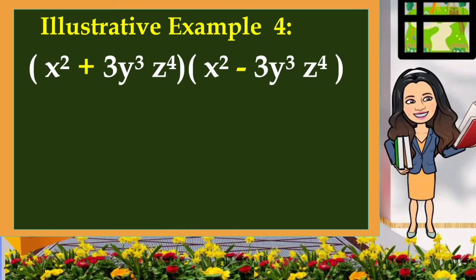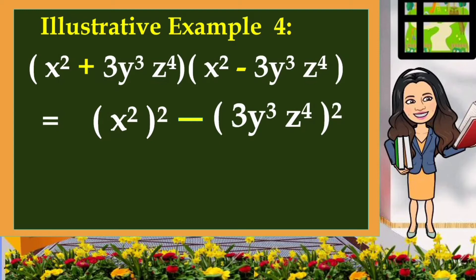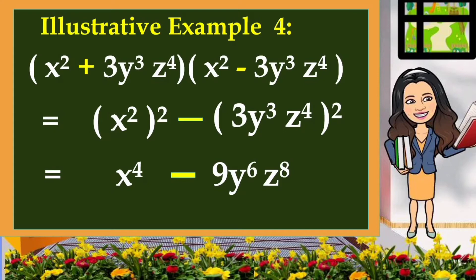Another one. Given X squared plus 3Y cubed Z raised to 4, multiplied by the quantity X squared minus 3Y cubed Z raised to 4. Using the same process, we square the first term minus we square the last term. Now, let us apply the law of exponents for powers — we are going to multiply their exponents. The square of X squared is equivalent to X raised to 4. And here, we square 3 first, that is 9, and then multiply their powers: 3 times 2 and 4 times 2. So the result is 9Y raised to 6, Z raised to 8.